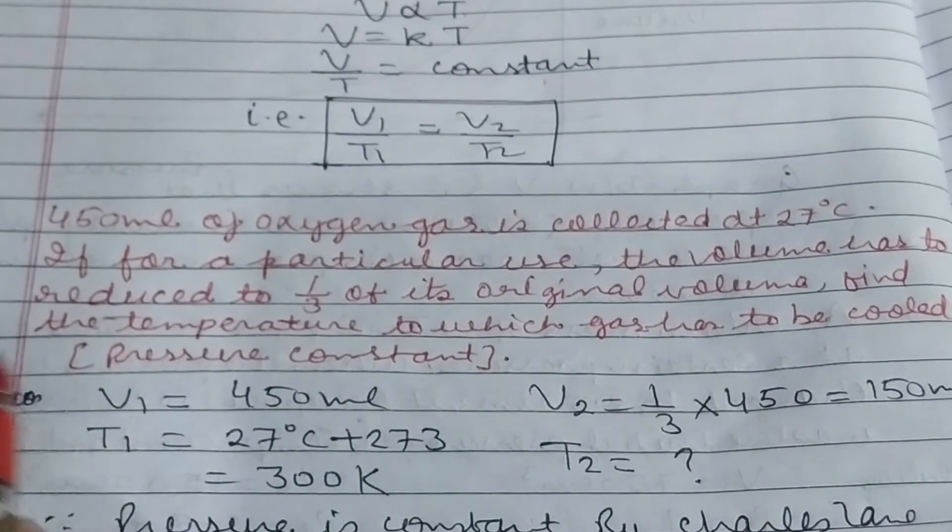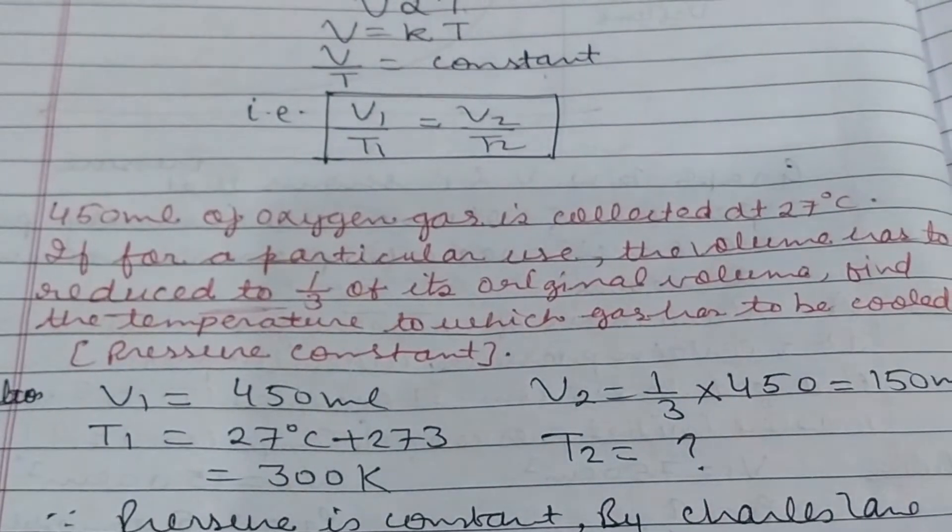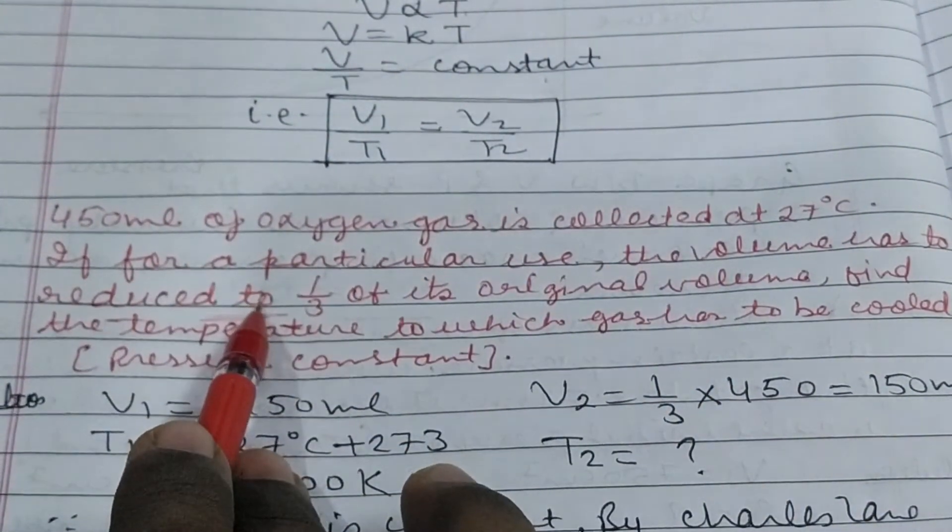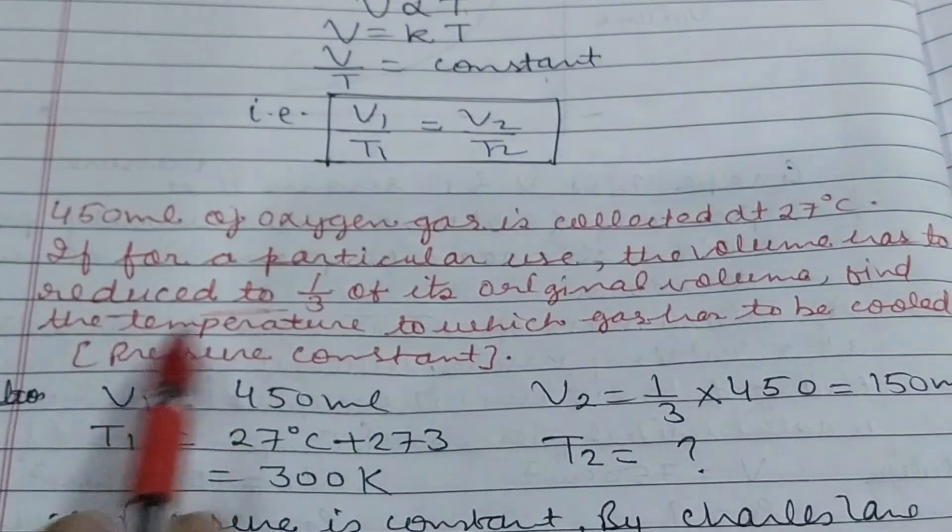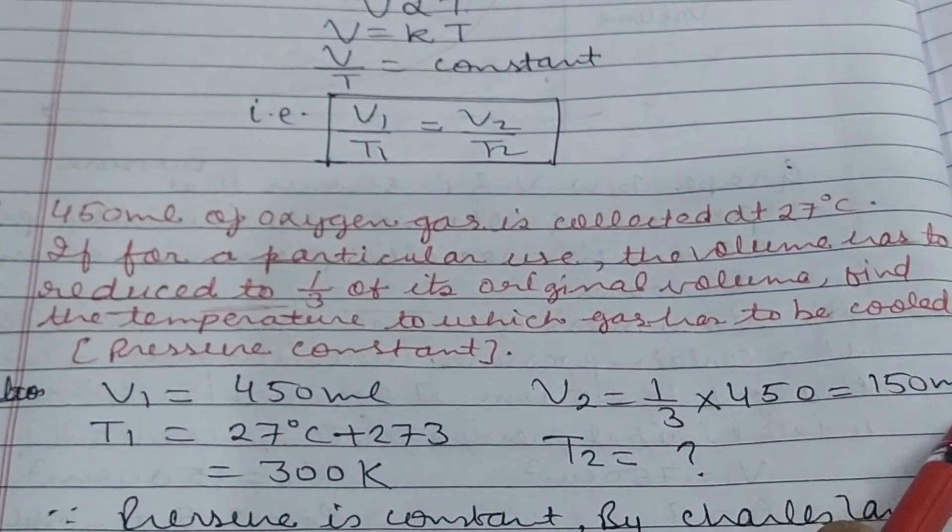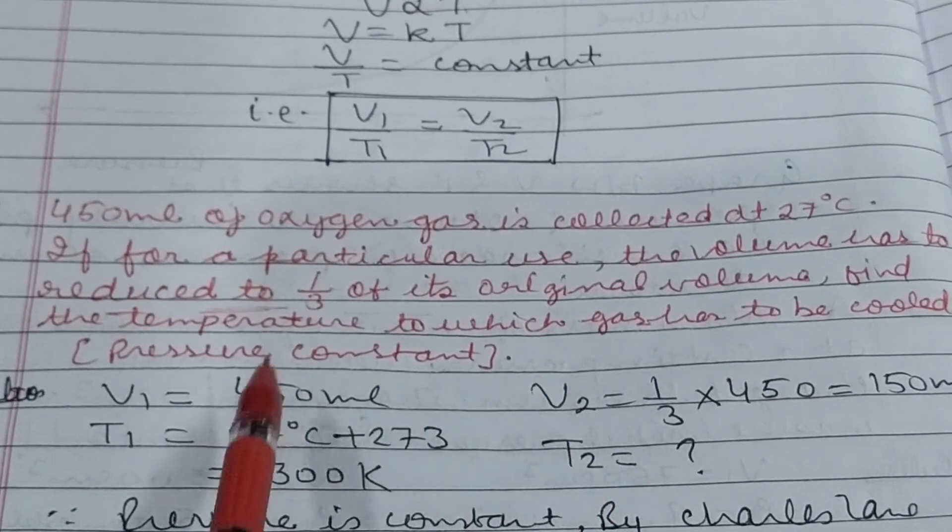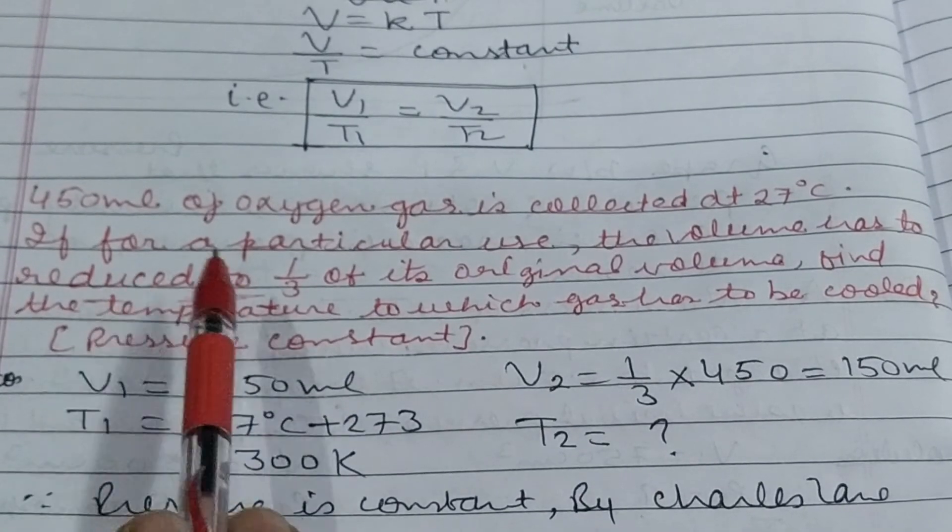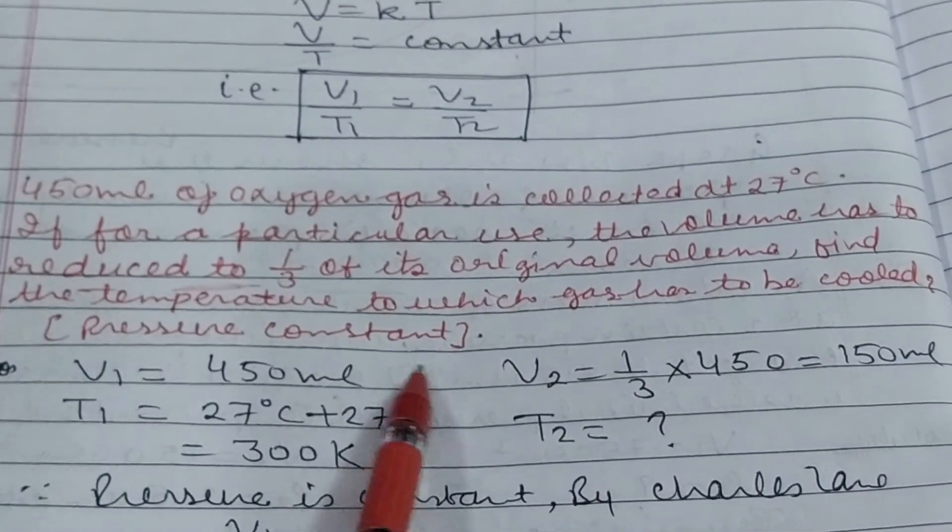It should be noted: volume reduce to versus reduce by. If reduce to is given, then the data given is the final volume. If reduce by is given, subtract this value from original value. Here reduce to is given, so this is the final volume. V2 will be one third of 450, which is 150 ml. If reduce by was given, then V2 equals 450 minus 150.